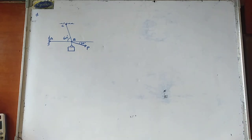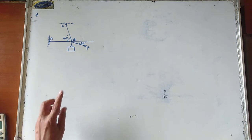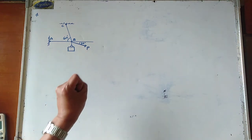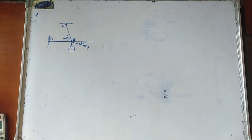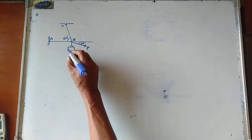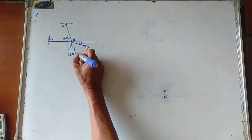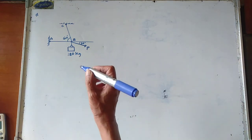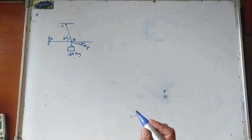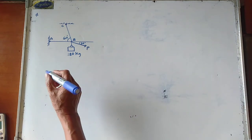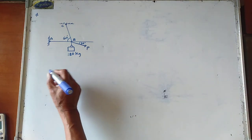Sample number 4: Find the smallest value of P for which the crate shown will be in equilibrium in the position shown. The mass of the crate is equal to 180 kilograms. First, let us try to draw the free body diagram of joint B.